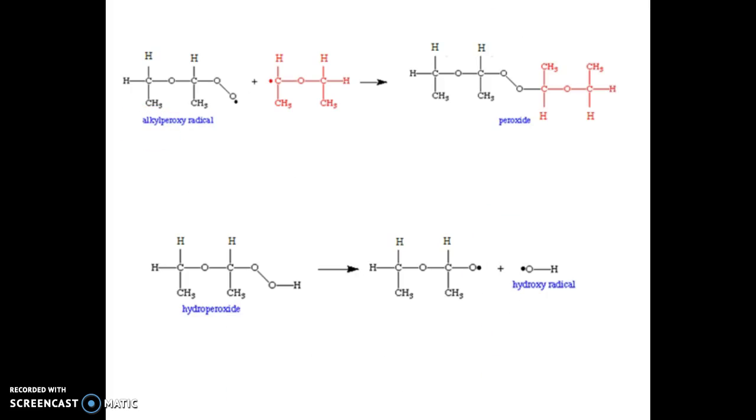From here, any of several steps can happen. For example, the alkyl peroxy radical could react with an ether radical, which is diethyl ether, to form a dialkyl peroxide.